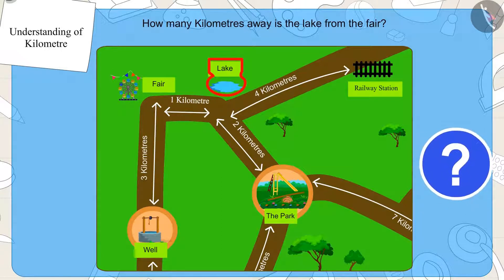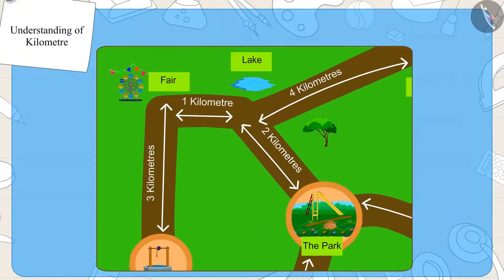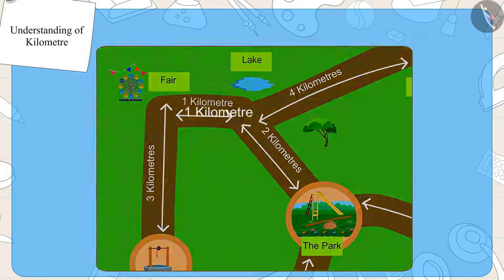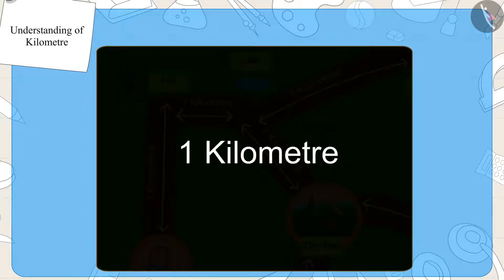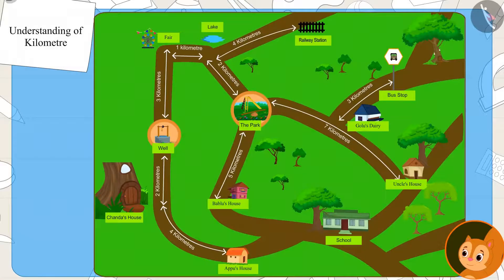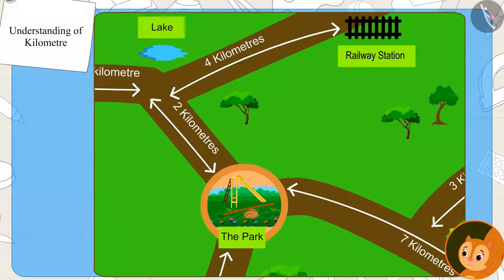Absolutely right, the distance from the fair to the lake is one kilometer. Now Chanda saw on the map that the distance from the lake to the railway station is four kilometers and that of the park from the lake is two kilometers.